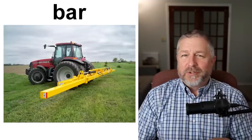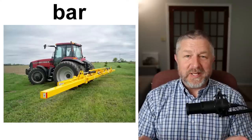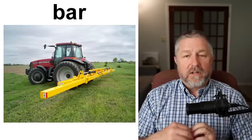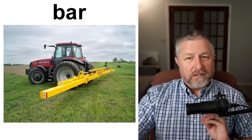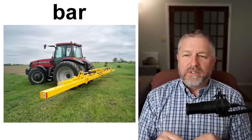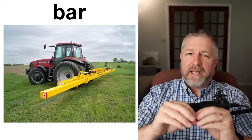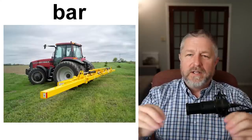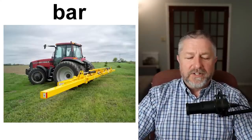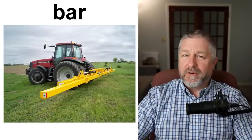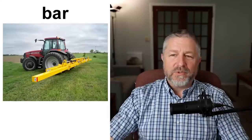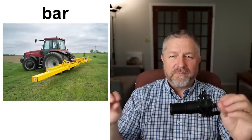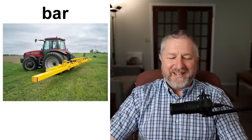And then the general term for anything else would just be a bar. This piece of equipment has a long bar along the back. In the back of my van there is a bar that goes across. So bar is a general term we often use to describe anything long that sits between two other things.